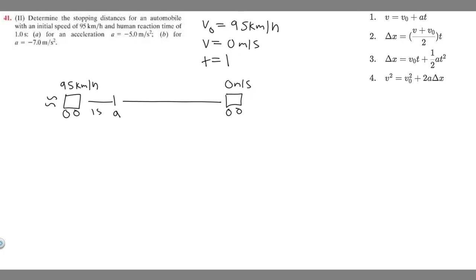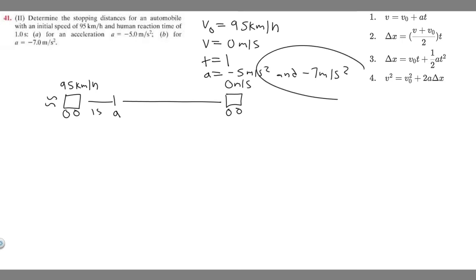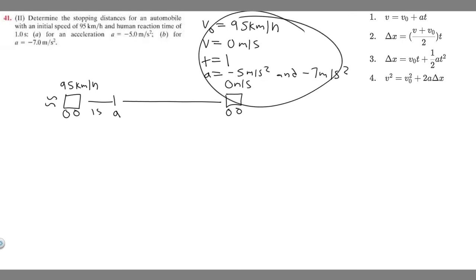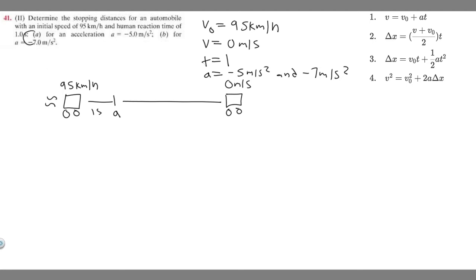For acceleration we're going to have two different values: -5 m/s² for the first part and -7 m/s² for the second. One thing you might notice is that the initial speed is in kilometers per hour while the accelerations are in meters per second squared and time is in seconds, so we need to convert the speed into meters per second.